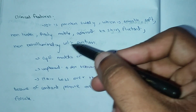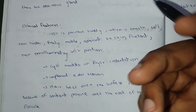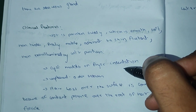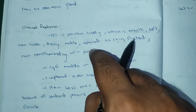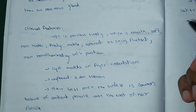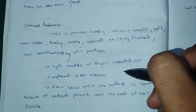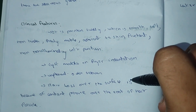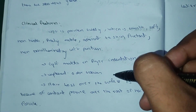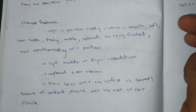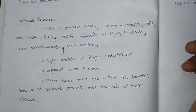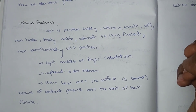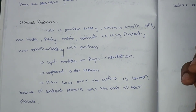It is fluctuant and non-transilluminating. The cyst molds on finger indentation. The smell is unpleasant. Hair loss over the surface is common because of the constant pressure over the root hair follicle.